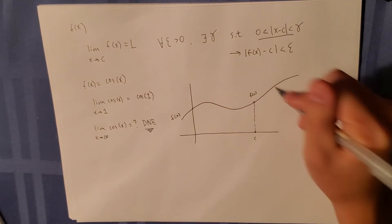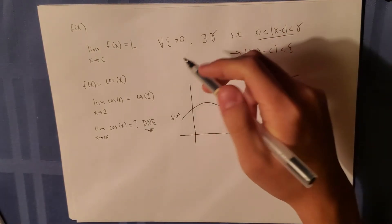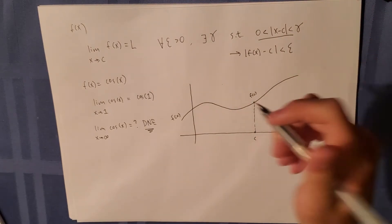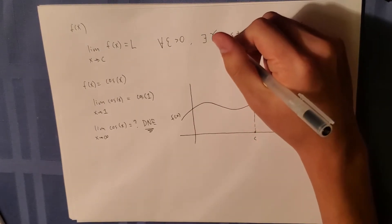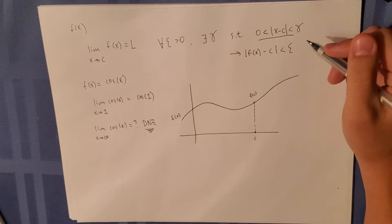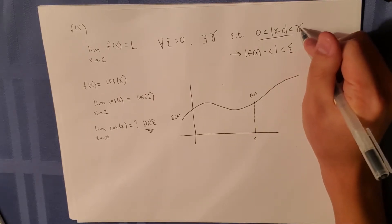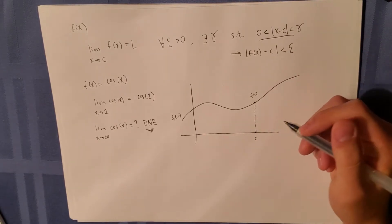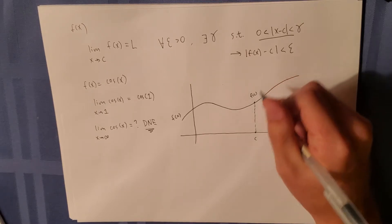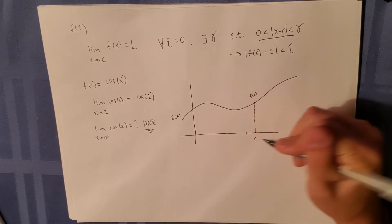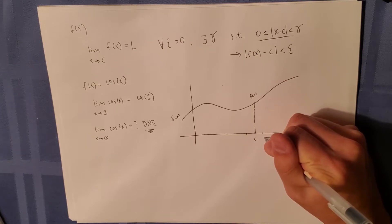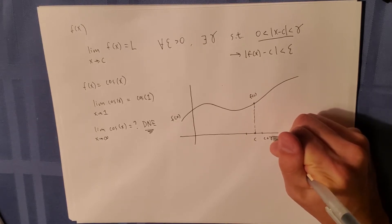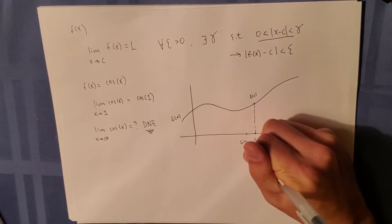So epsilon, we want that for any epsilon, we can choose any epsilon such that there is a delta where x minus c is within that delta. So delta would be the bounds around this c. This would be c plus delta, c minus delta.